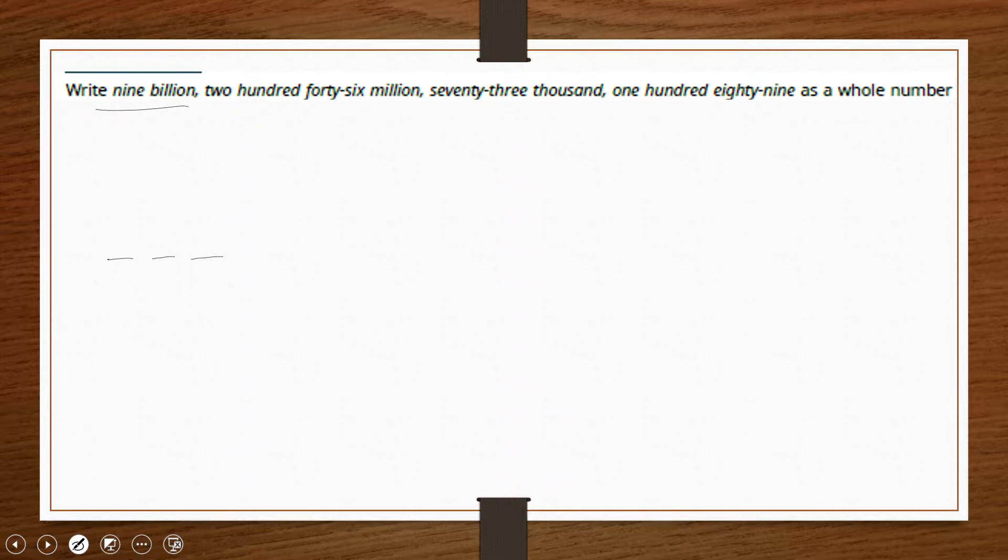Now think of what we said earlier versus something like 179 billion. This would indicate that we actually only have 9, which means it would go in the last place value of that period. So that is our billions place.